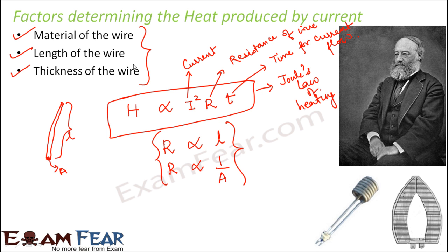We can say that heat is dependent on the length of the wire and thickness of the wire. As for material of the wire, resistance also depends on the resistivity of the wire, and resistivity differs for different materials. The wire here refers to the heating element of any appliance — that heating element could be a wire or something else — but how much heat is produced by a specific current is determined by the properties of the heating element.